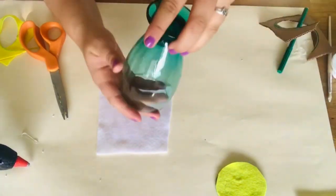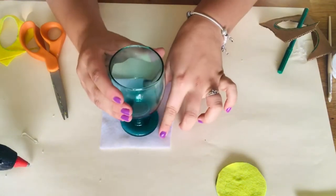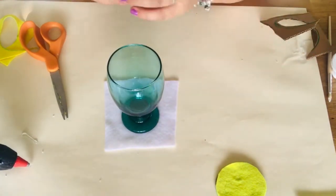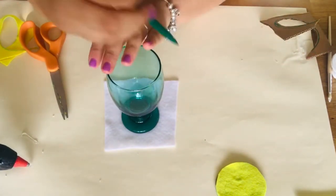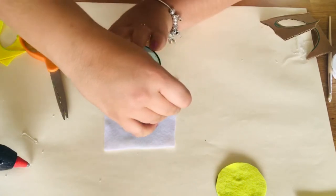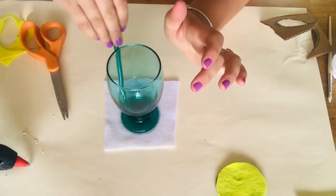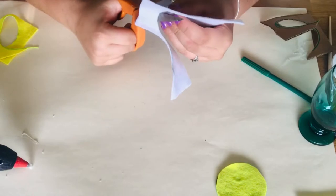Now take your white felt and your other rounded object and you're going to trace it around. Make sure your second round object is smaller than the first. Cut out your white felt.